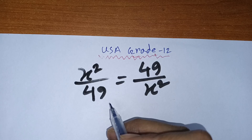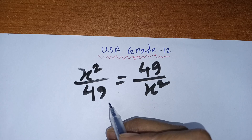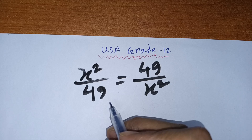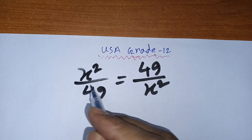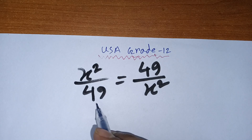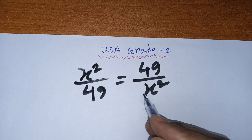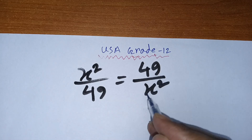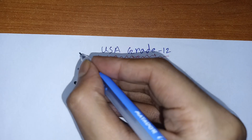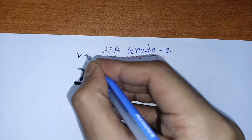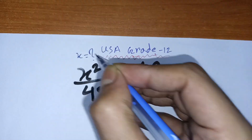Hello viewers, in this video we will solve an interesting USA grade 12 math problem. Our equation is x squared divided by 49 is equal to 49 divided by x squared. We find out what is the value of x.